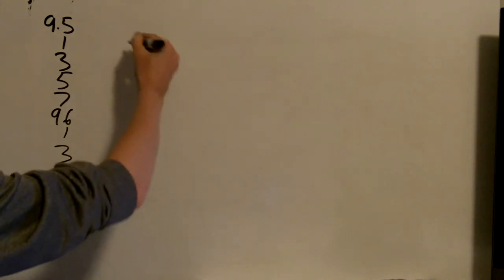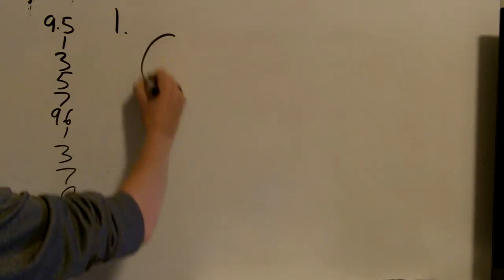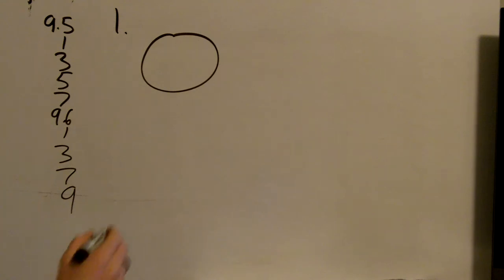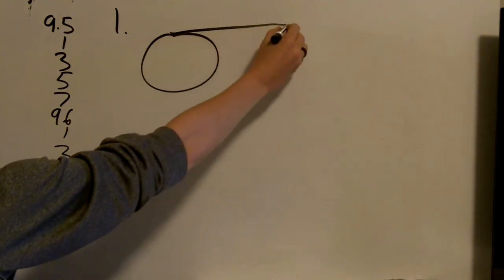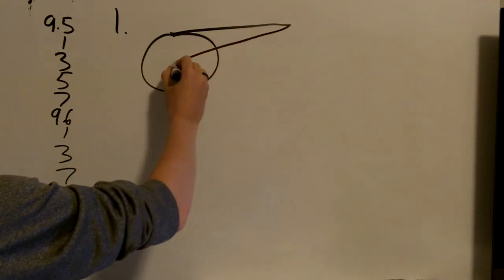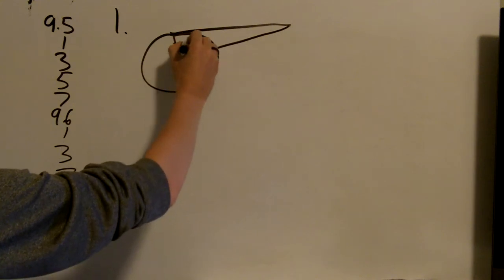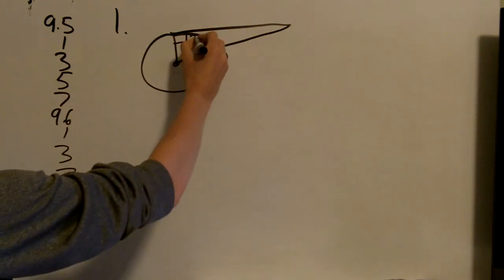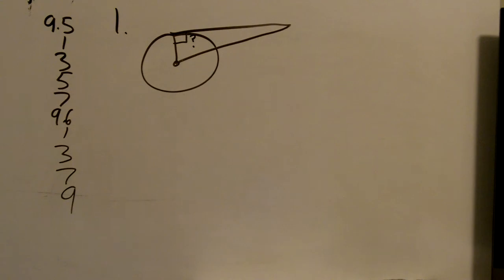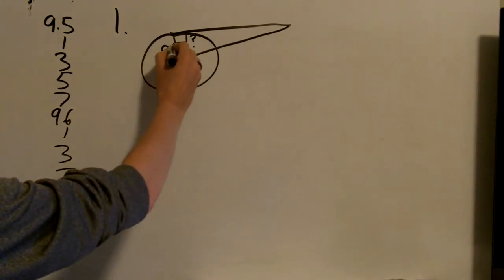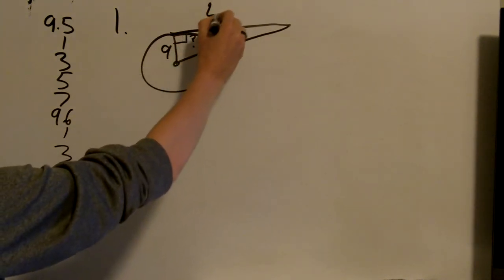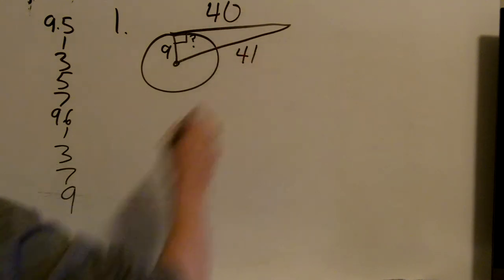So number 1, for 9.5, we have a circle like this. We have a tangent and then a secant that comes back to the center. So we want to check to see if this is a right angle. So we have that this part is 9, this part is 40, and this part is 41.